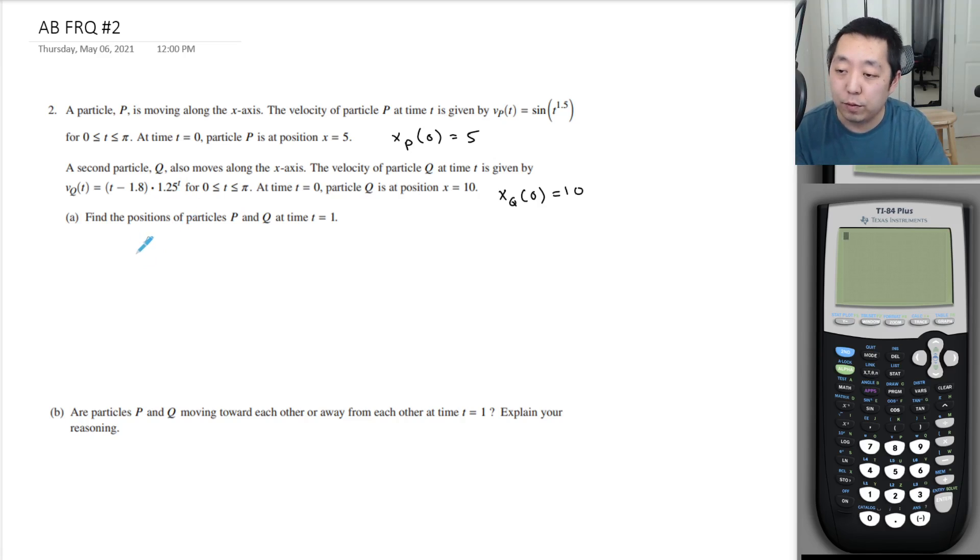Remember the integral from 0 to 1, for example, gives you the change. So if you want the position at 1, you're going to start at 0 and add in the change in position, which is the integral of vP(t) dt. And then xQ(1) is going to be the exact same thing.